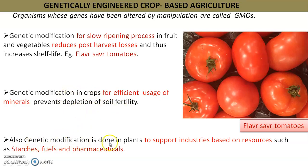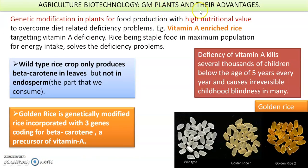Plants were developed that use minerals efficiently, keeping the soil fertile. Modifications were also made for producing more industry-based resources like starches, fuels, and pharmaceuticals needed in many industries and laboratories. We should not forget vitamin A-enriched rice called golden rice. Because rice is a staple food in most countries, many people depend on it. Ordinary white rice is deficient in vitamin A because the wild-type rice produces beta-carotene only in leaves, not in the endosperm, which is what we consume.